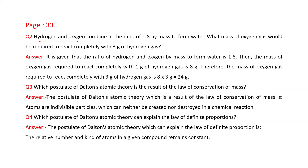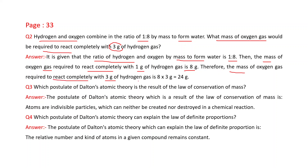Next question: Hydrogen and oxygen combine in the ratio of 1:8 by mass to form water. What mass of oxygen gas would be required to react completely with 3 grams of hydrogen gas? Given the ratio of hydrogen to oxygen by mass is 1:8, 1 gram of hydrogen requires 8 grams of oxygen. Therefore, 3 grams of hydrogen requires 8 × 3 = 24 grams of oxygen.